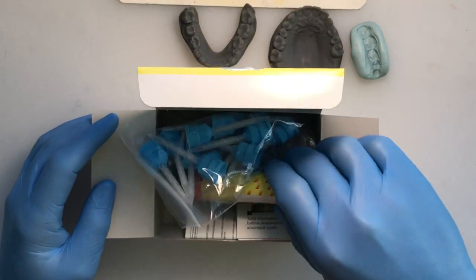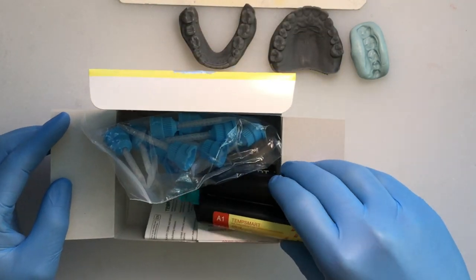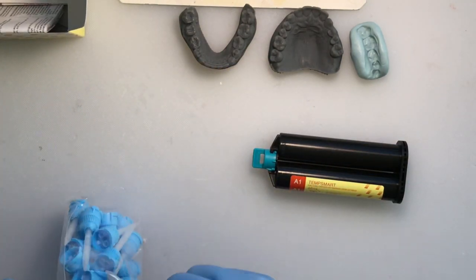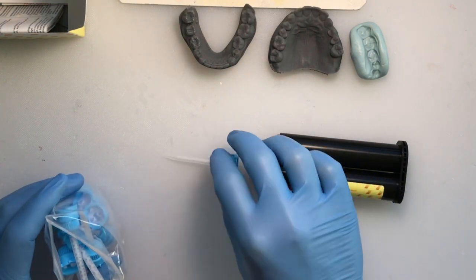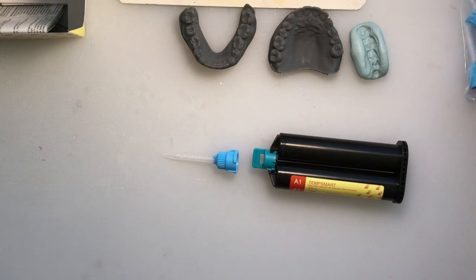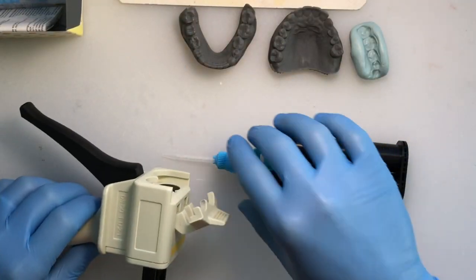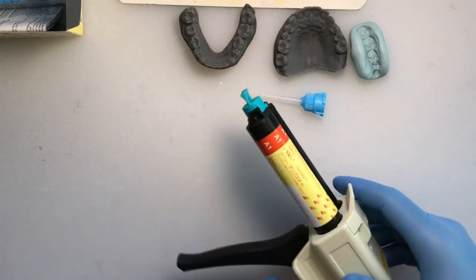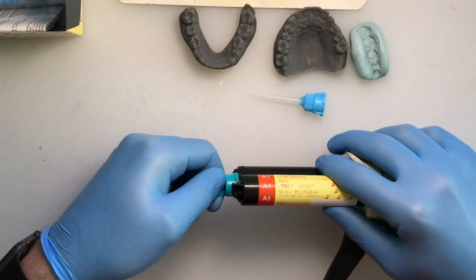It comes packaged very similar to other materials. It has a dual cartridge carrier that when placed into an extrusion gun with the proper tip in place will allow proper mixing of the materials to allow the adequate setting and strength of the material.